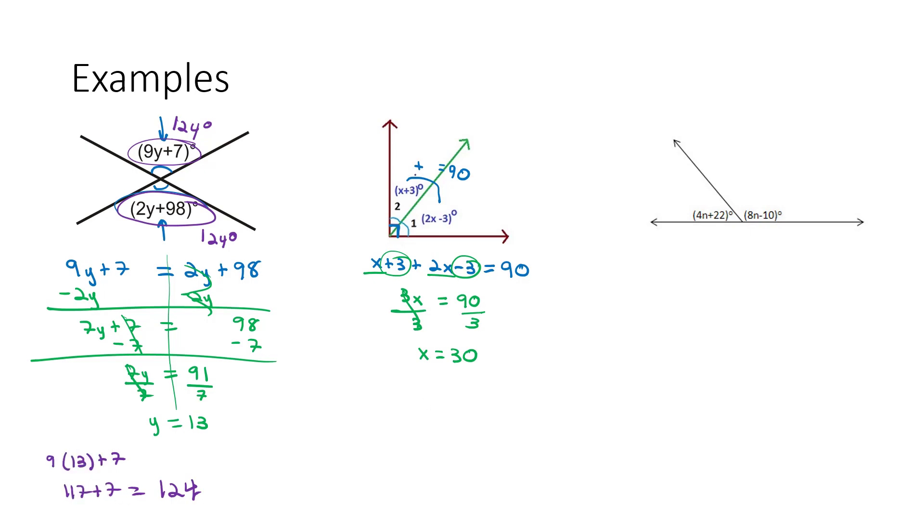Now we just have to plug them in to figure out what the angles are. The first angle was x plus 3, or 30 plus 3 equals 33. So the first angle is 33 degrees. The second angle, we can either take 90 minus 33, which is 57 degrees. Or we could have plugged the 30 in for x. 2 times 30 is 60 minus 3 is 57 degrees. We have our two complementary angles.